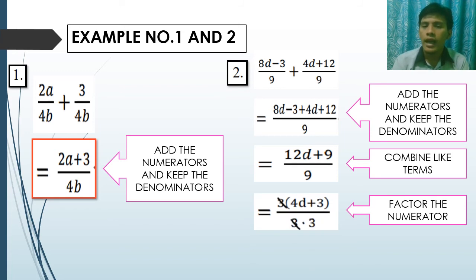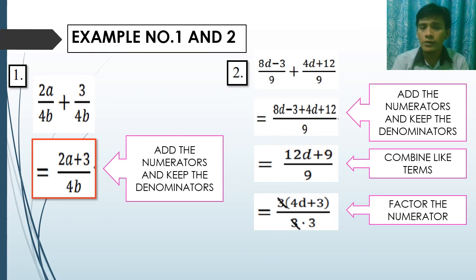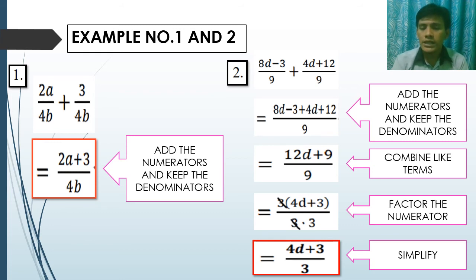12 and 9 have a common factor of 3. Factor the numerator as 3 times the quantity (4d plus 3), because 12 divided by 3 is 4, giving 4d, and 9 divided by 3 is 3. The denominator is 9, which equals 3 times 3. The 3 in the numerator and one factor of 3 in the denominator cancel, leaving 4d plus 3 over 3 as our final answer.